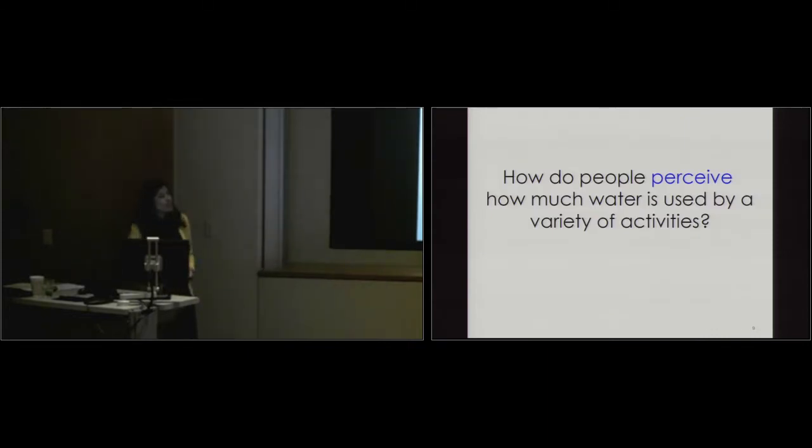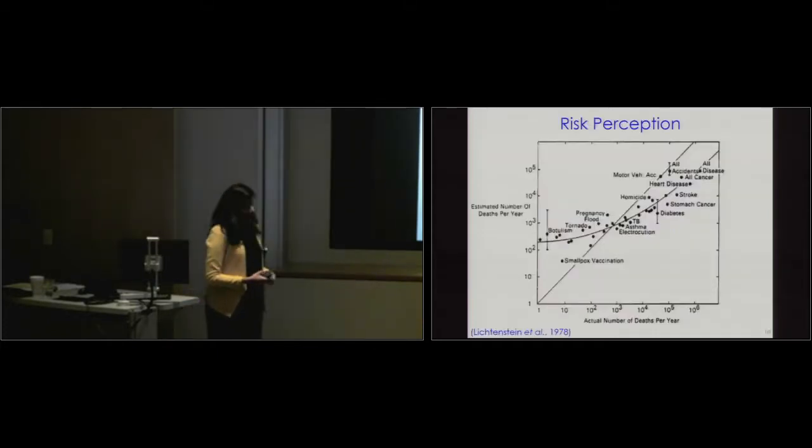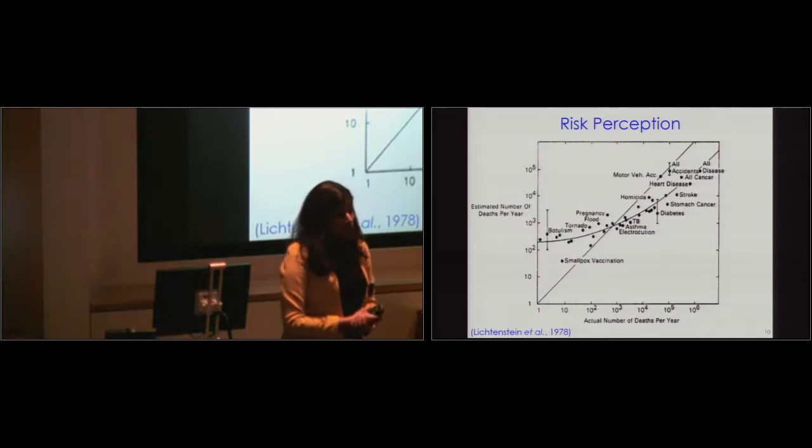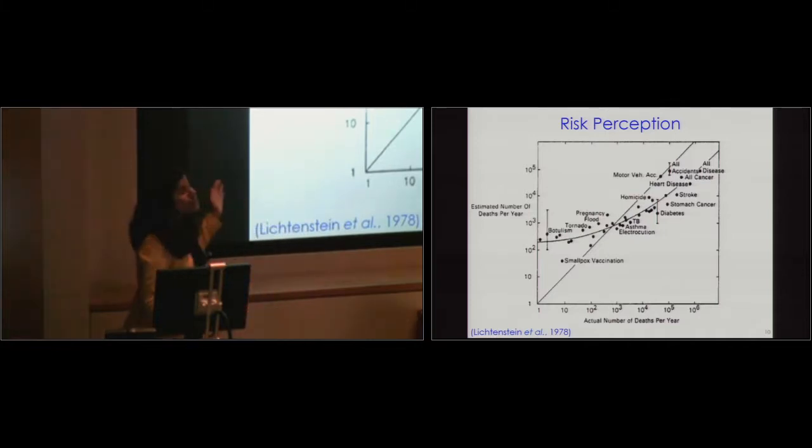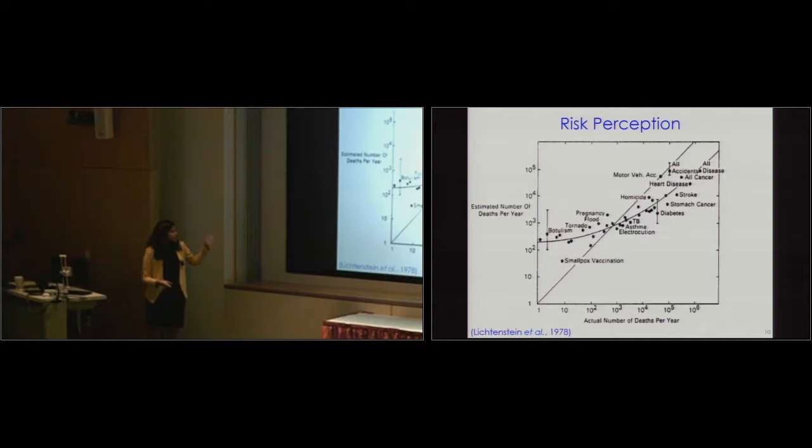So, how do people perceive how much water is used by a variety of different activities? And that's something that I've been pretty curious about for a long time. So this was actually inspired by this great paper that was published in 1978 by Sarah Lichtenstein et al. So what they did back in the day, before many of you were born, is they asked people for these 30 different causes of death, how many people die every year, okay? So on your y-axis you have estimated number of deaths per year, and on your x-axis you have actual number of deaths per year. So it goes from 1, 10, 100, so it's a log-log scale. So what you find is data that lies along the diagonal line means that people's perceptions match reality. Data that lies above the line means that people are overestimating these causes of death. Data that lies under the line means people are underestimating these risks.